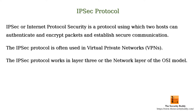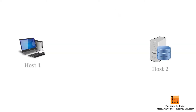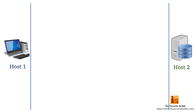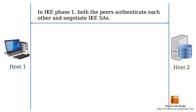Let's say there are two hosts, Host 1 and Host 2, that want to establish secure communication through IPsec. Host 1 sends interesting traffic to Host 2. What traffic is considered interesting depends on the security policy of the VPN. Both hosts then start the IKE process. In IKE Phase 1, both peers authenticate each other and negotiate IKE Security Associations (SAs).